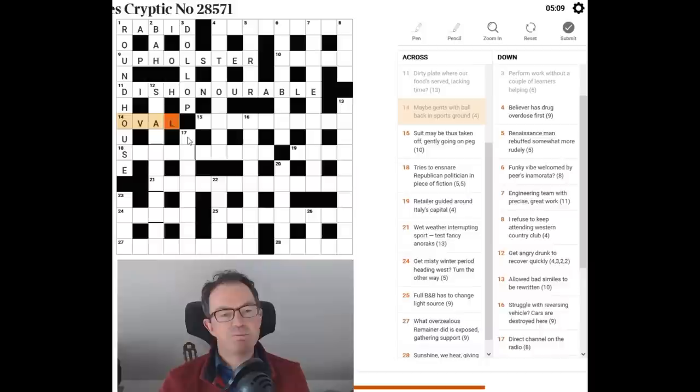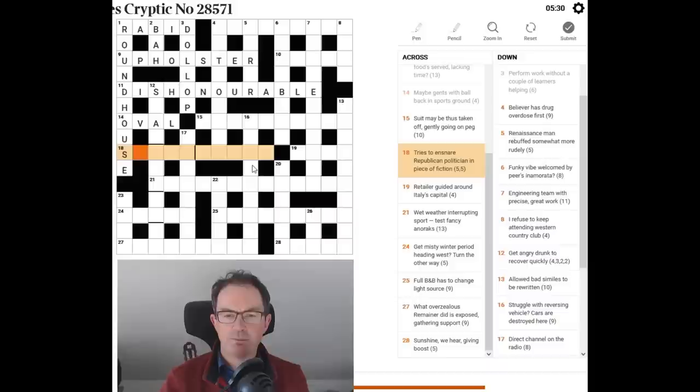So maybe gents is a lavatory. A lav. With ball. O. They often use ball to indicate the letter O. I think it's because it looks like a ball. And we turn that lav O and we reverse it. We send it backwards and we get the sports ground. So far we've had an amazing. I haven't actually got stuck on any clue yet. That's going to be that's going to be the kiss of death isn't it?